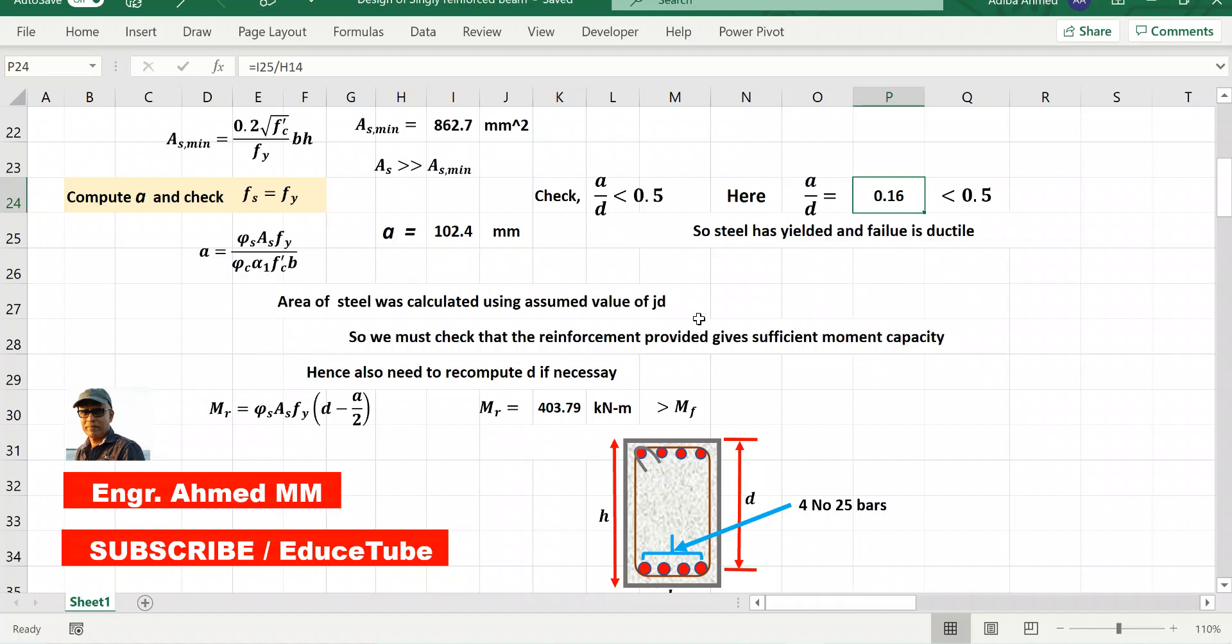And here I want to mention, I forgot this alpha_1. Actually I have used that alpha_1 equal to 0.82. There is an equation to find this alpha_1, beta_1. We can find it and we can put this value for finding the equivalent rectangular stress block depth.